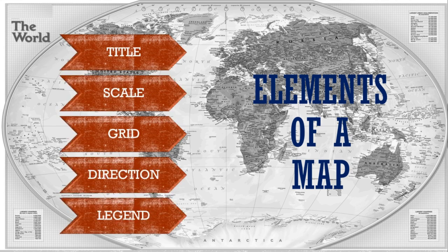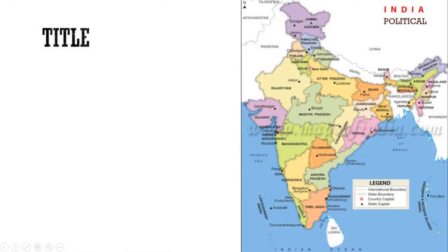They are title, scale, grid, direction, legend or symbols, etc., which make it easier for people like us to understand the basic components of maps. The title of a map is one of its vital features.